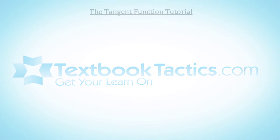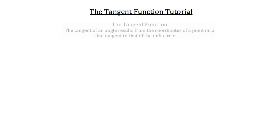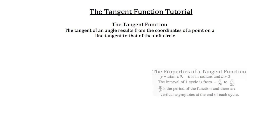This is the tangent function tutorial. The tangent of an angle results from the coordinates of a point on a line tangent to that of the unit circle. These are the properties of a tangent function.